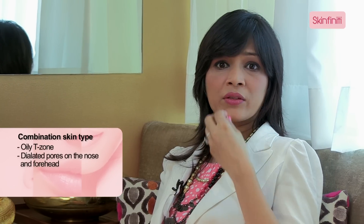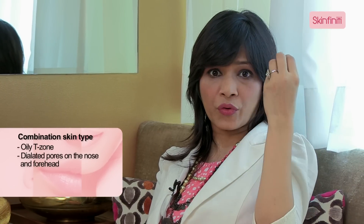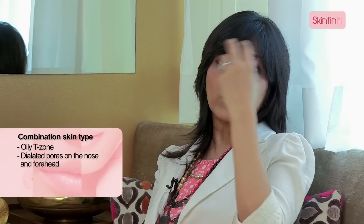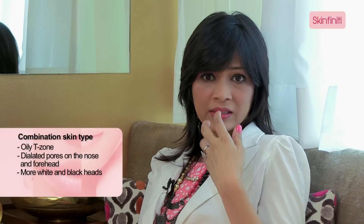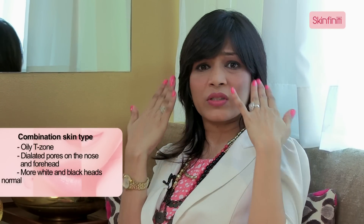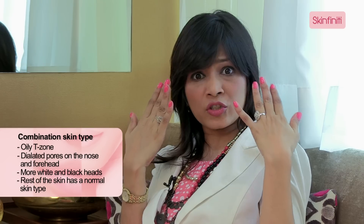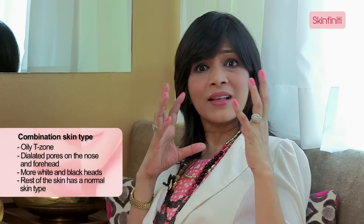Combination skin is where you have an oily T-zone. The pores may be dilated on the nose and on the forehead and you may also have more blackheads or whiteheads in this zone, while the rest of your skin is pretty much normal. That's the combination variety.